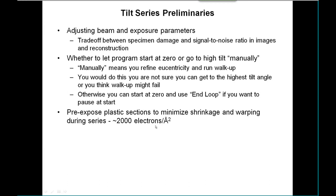Very important with plastic sections is to pre-expose by some amount — about 2,000 electrons per square angstrom — so that you've gotten most of the shrinkage and warping out of the way, and not much will happen during the tilt series.